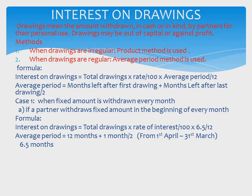Beginning of every month means on the first date of every month — 1st April, 1st May, 1st June, 1st July, and so on up to 1st March. In this case, interest is calculated as: Total Drawings × Rate/100 × 6.5/12, where 6.5 is the average period.